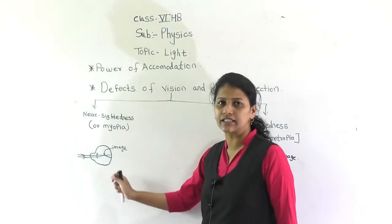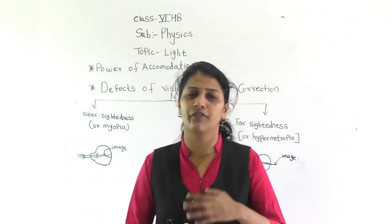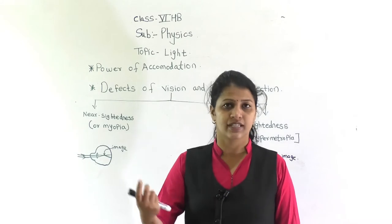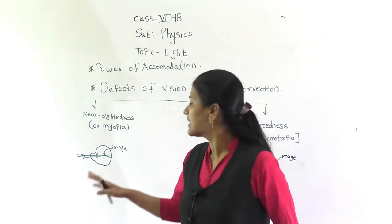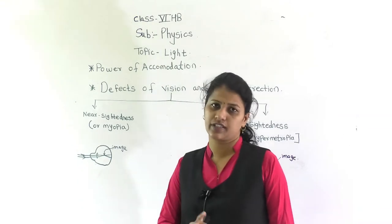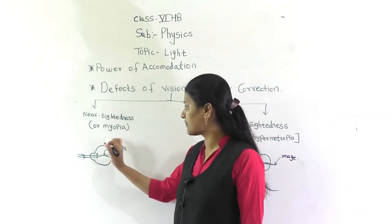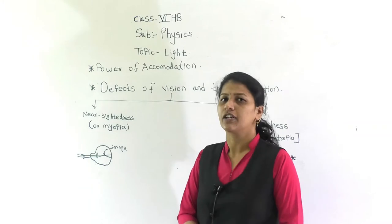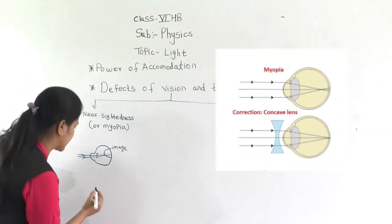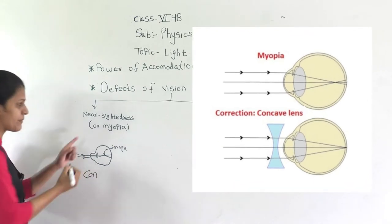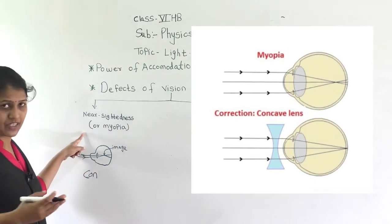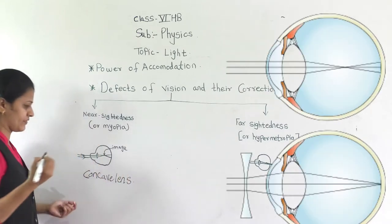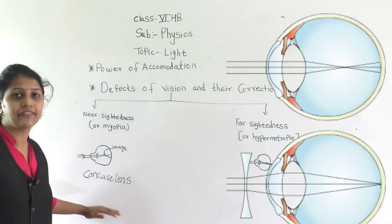When you go to the doctor to check your eye, they offer you spectacles with particular lenses. If they find that it is myopia — the person is unable to see nearby objects — they give a concave lens. We can correct myopia by using a concave lens.